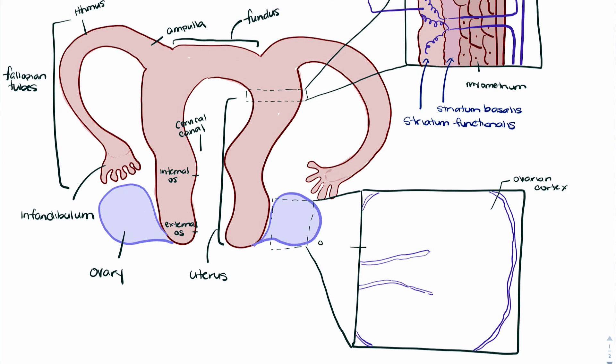The inner layer is the ovarian medulla and this is where our veins, arteries, and nerves are going to live. So it's here where we get the blood supply going in and the nervous tissues going into the ovarian cortex.